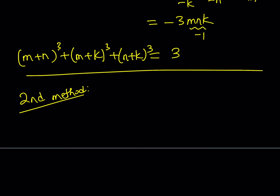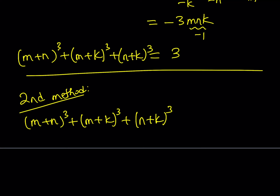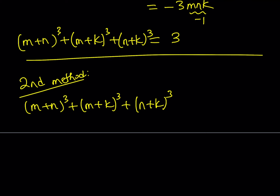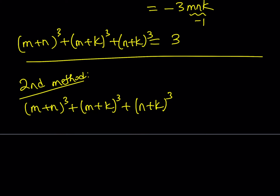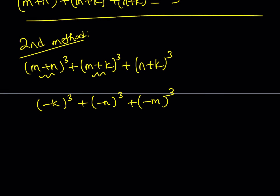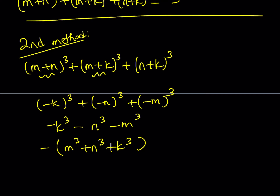The second method involves a slightly different strategy. Let's start with what we're trying to find. We're going to use the idea that m plus n equals negative k, m plus k equals negative n, and n plus k equals negative m. So our expression becomes (−k)³ + (−n)³ + (−m)³, which equals negative k³ minus n³ minus m³, or equivalently negative (m³ + n³ + k³).